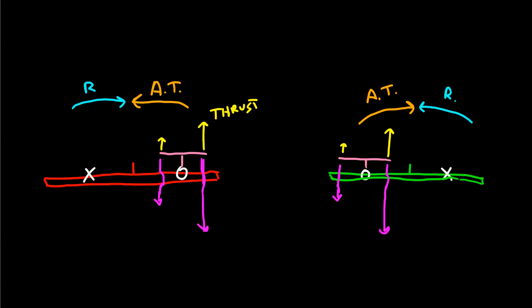Now, we don't need the thrust arrows anymore. We can get rid of them, because this is what we're going to be focusing on. As you can see, more airflow going over a wing means more lift. That's pretty basic. Similarly, over here, more airflow over a wing means more lift.